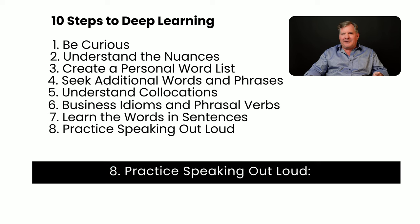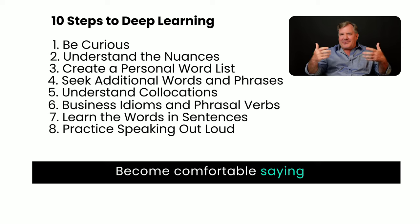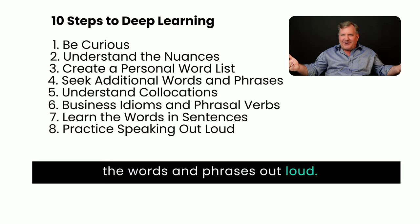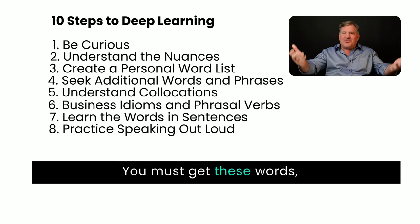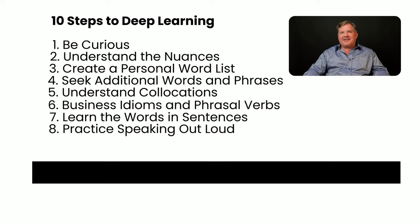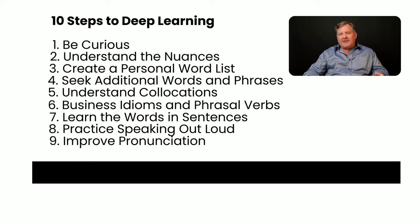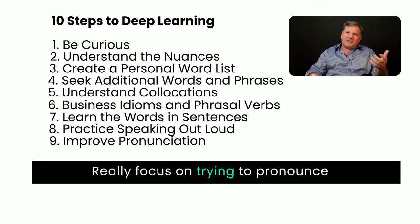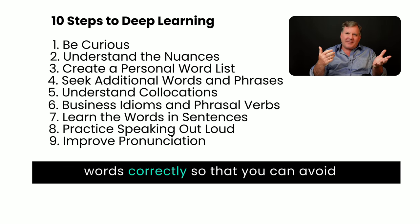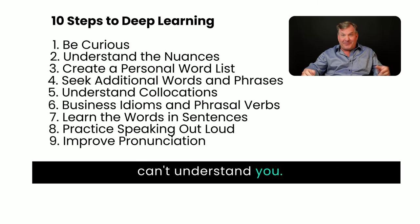Number 8: Practice speaking out loud. Become comfortable saying the words and phrases out loud. You must get these words and sentences to come out of your mouth. Number 9 is pronunciation. Really focus on trying to pronounce words correctly so that you can avoid misunderstandings when other people can't understand you.